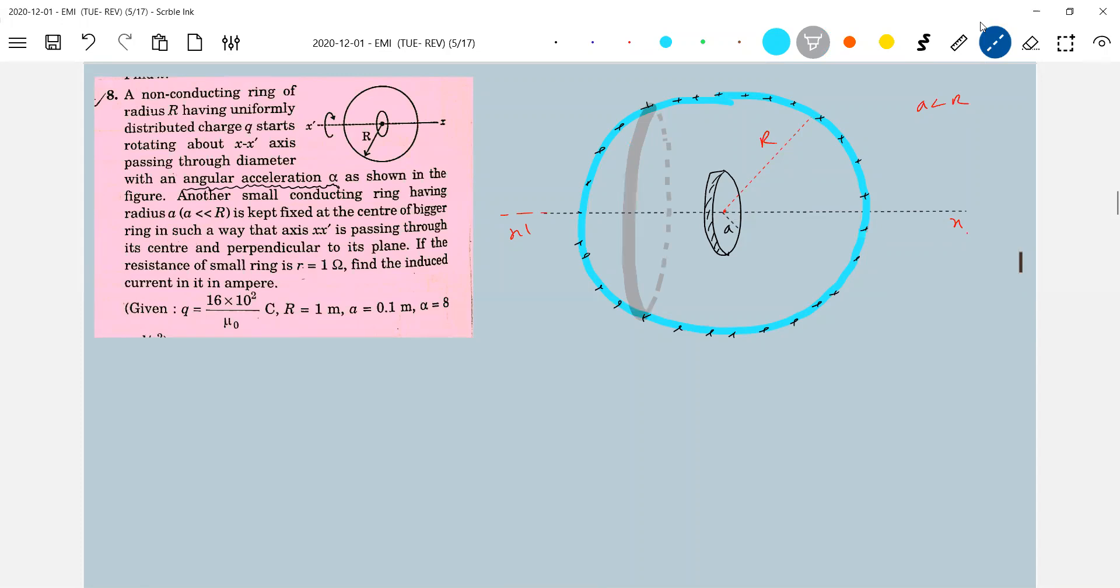Let me assume a strip, circular strip. So this will subtend an angle, let it be theta d theta. So this will be r d theta and let this radius, this will be r sine theta.